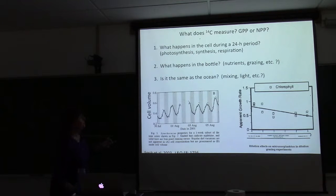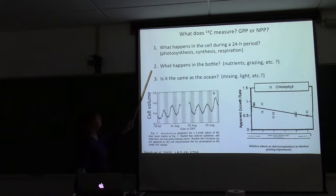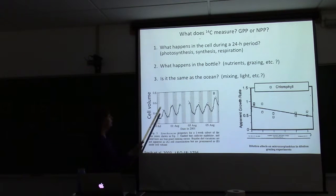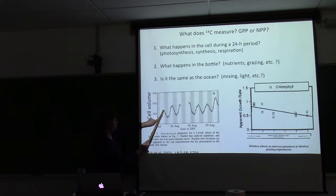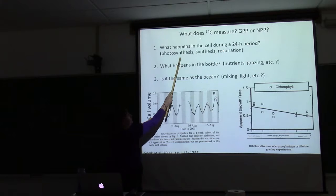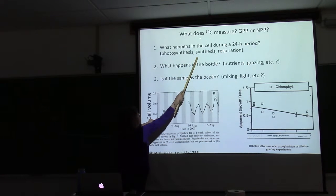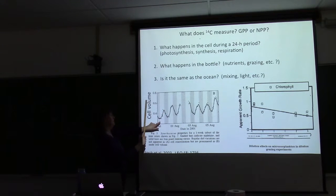So what does C14 measure? What happens to a cell? You've got photosynthesis, synthesis of compounds and respiration. If you look at cell volume, and this is data from Heidi Sasek at her Martha's Vineyard Observatory, this is the light and this is the dark. What you can see is in the light, the cell gets bigger.